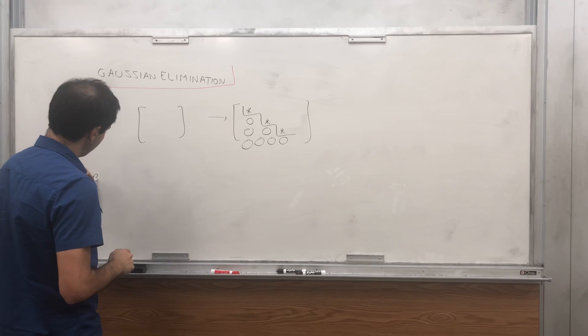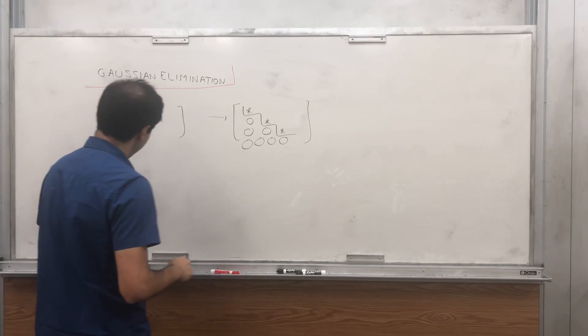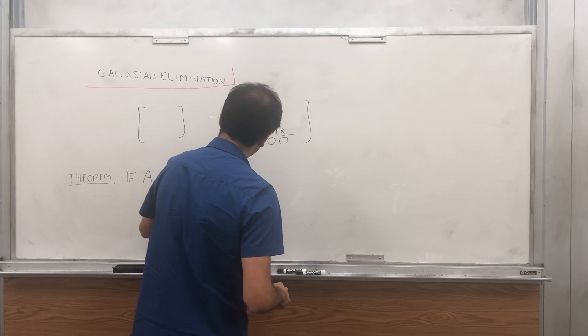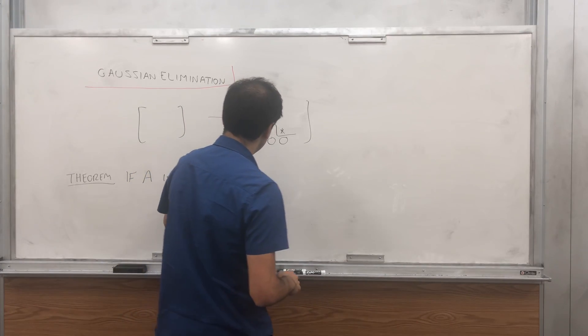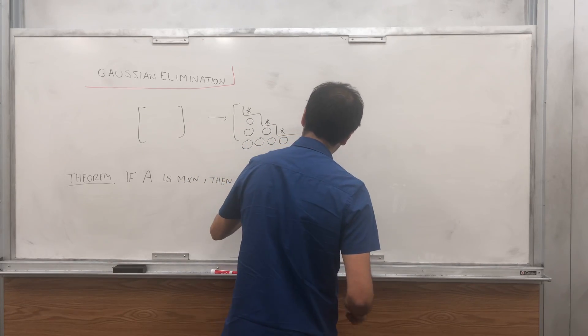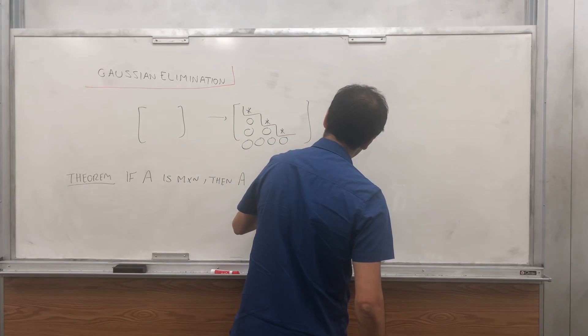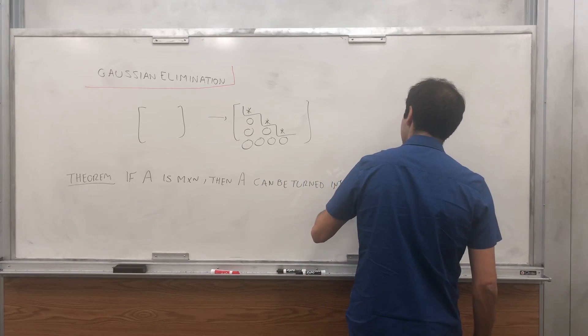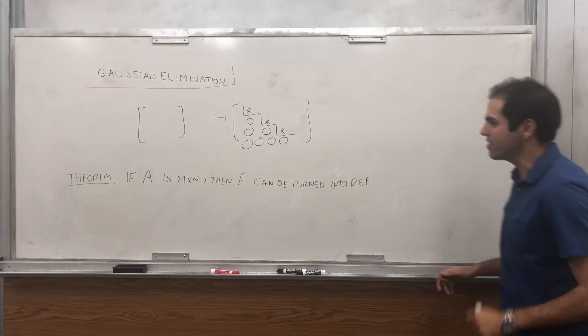So theorem: if A is n by n, then A can be turned into row echelon form. And at the end, I'll also explain reduced row echelon form, how that works.